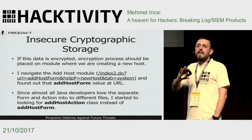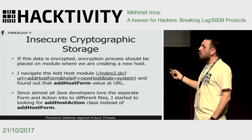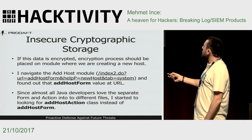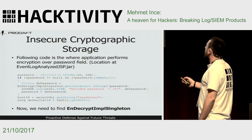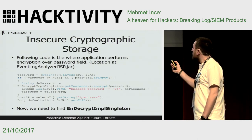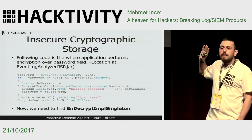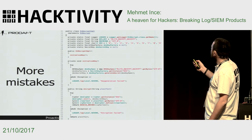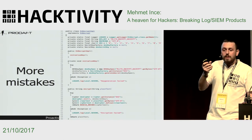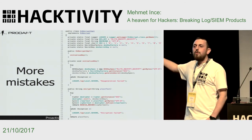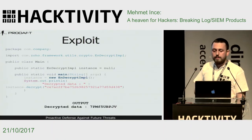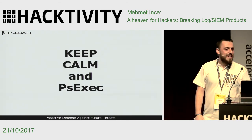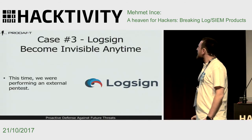We navigated to the add-host module and noticed the add-host form in the URL. Since developers follow naming conventions, if there's an add-host form class, there should be an add-host action class responsible for handling form actions. We looked at all classes to find the add-host action class. There was the password taken from user input going through encryption, but we hadn't seen any private key. Looking at the encryption class definition, we found a static key: 'Mlight Encrypt Decrypt'. This product used a static private key for encryption. We extracted the JAR file, created our own Java project, passed in the encrypted data, and called the decrypt function — and got the plaintext password.